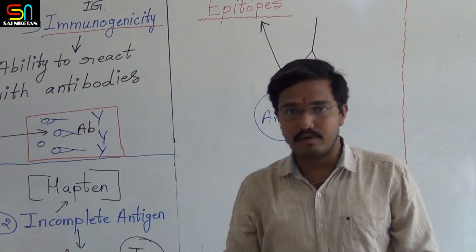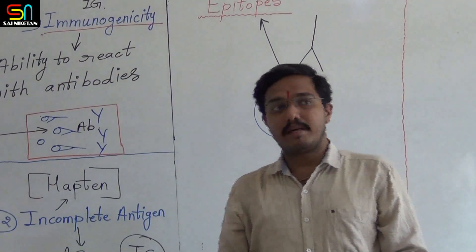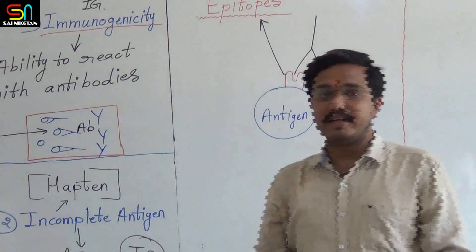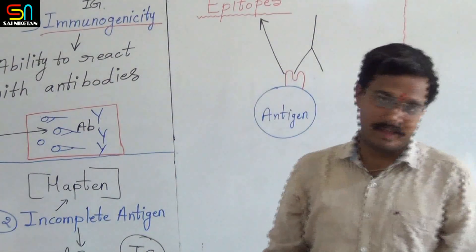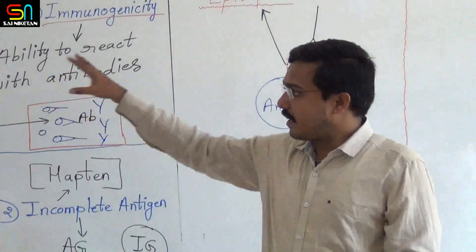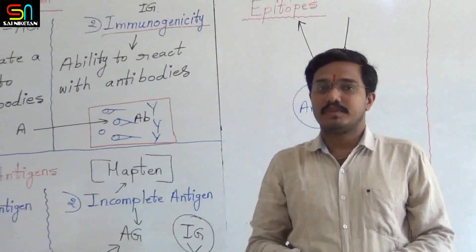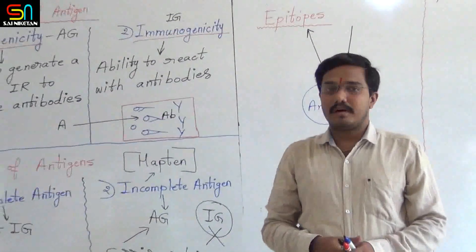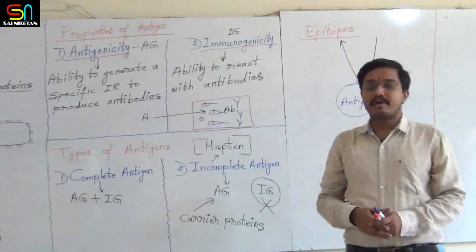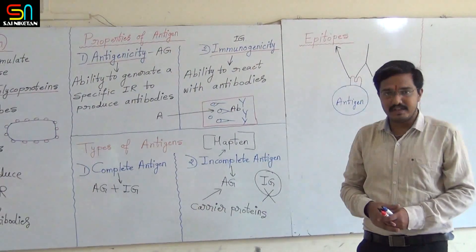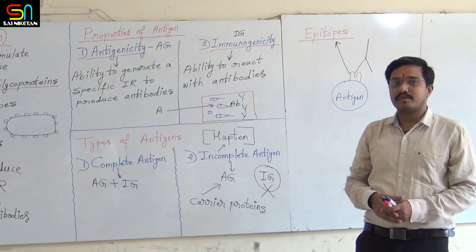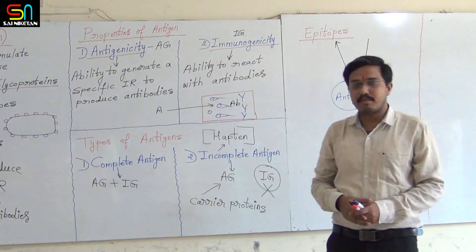Similarly, you get one more word — paratopes. That paratope I will tell you when I discuss about antibody. So this is the brief information about antigens. In the next video, we will discuss about antibodies.